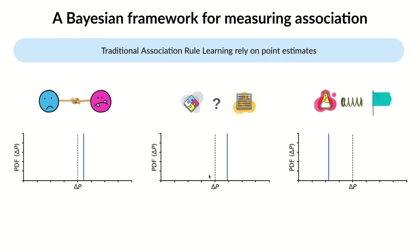Traditional association rule learning relies on point estimates of this value, comparing the estimate against zero added value. You can see how this case has a higher added value but is considered independent, whereas this other one is considered an association.